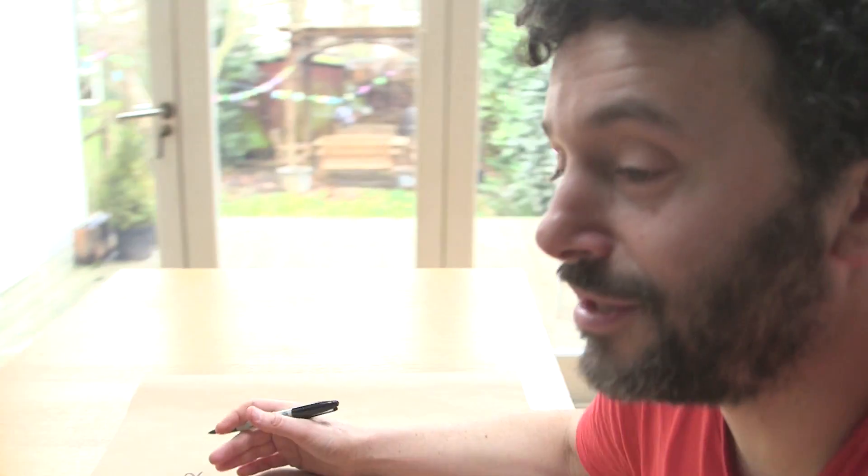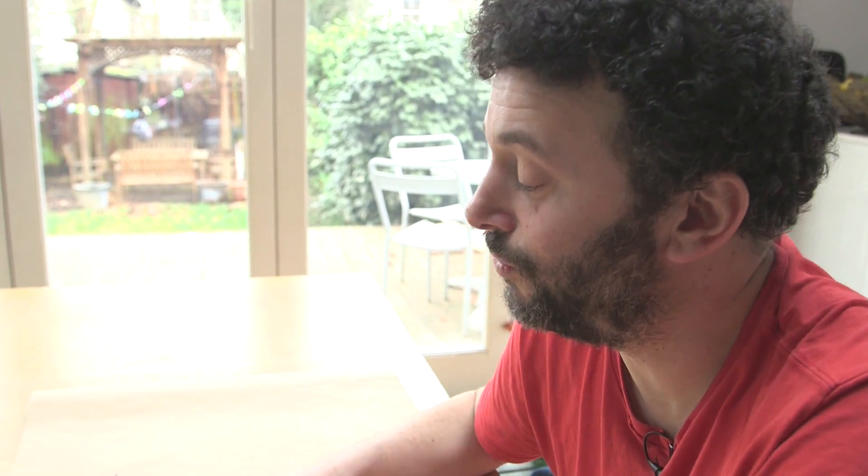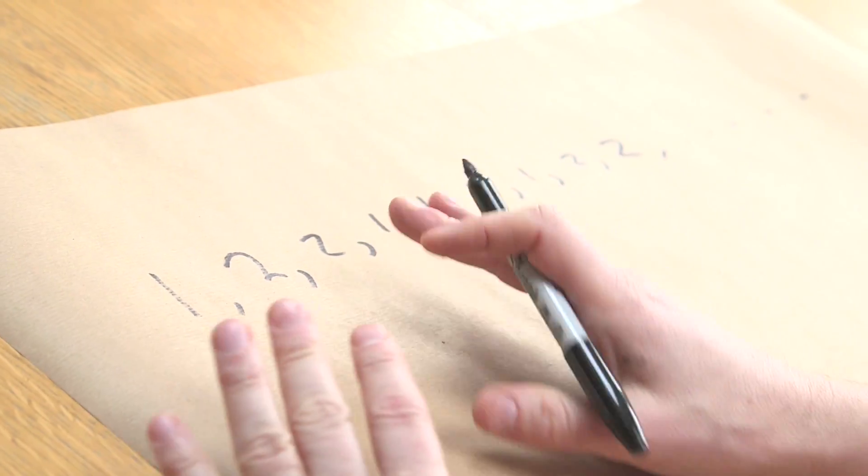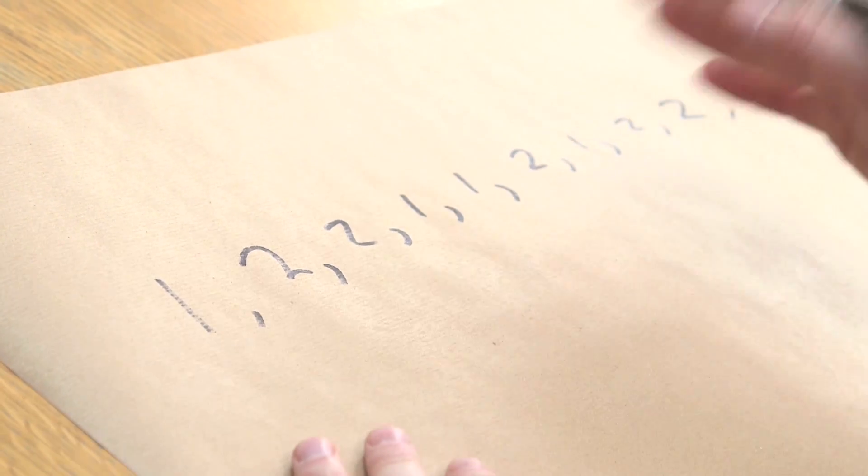Sometimes I like to call this the roadie sequence because it's like one, two, two, one, one, two, testing. Why is this interesting? This sequence carries on like this. There's going to be a pattern there and you might think this is a really boring sequence. It's got ones and twos and there's not even any particular order.